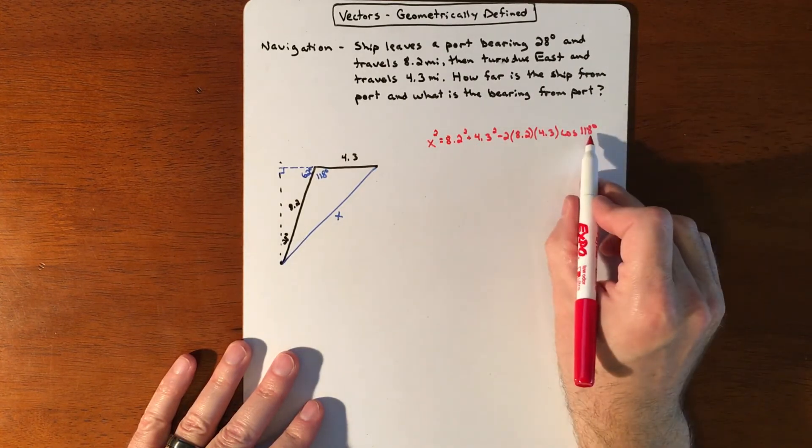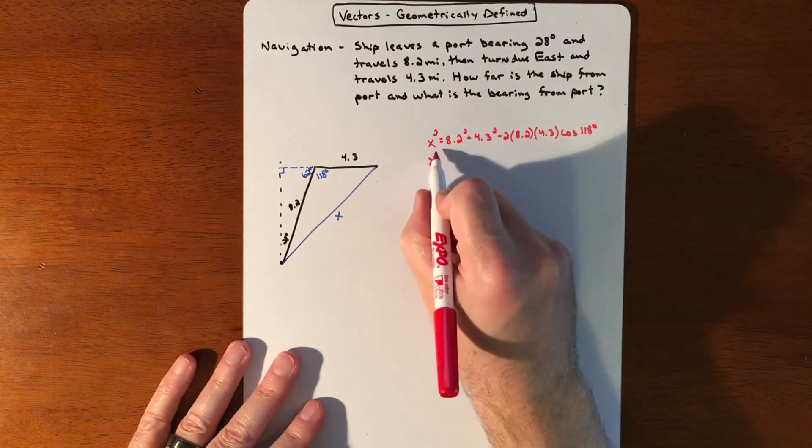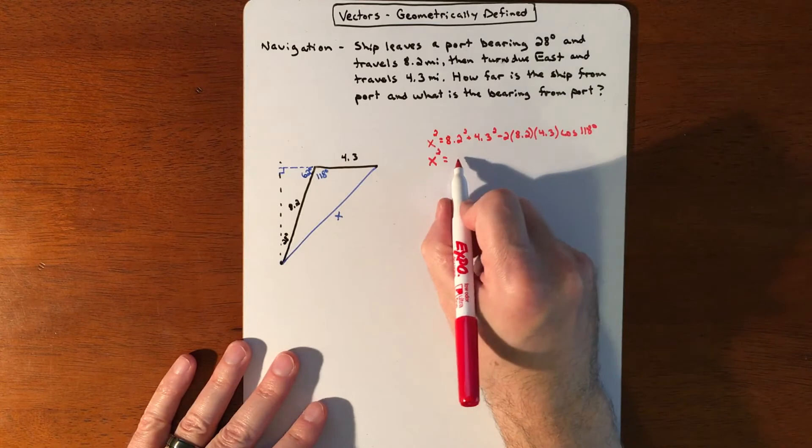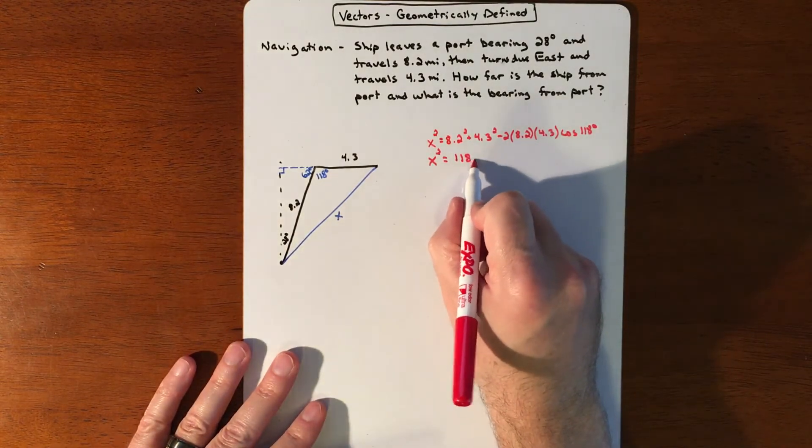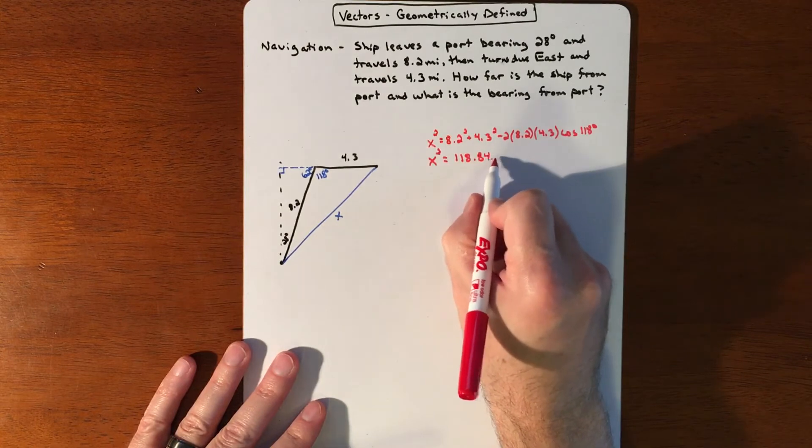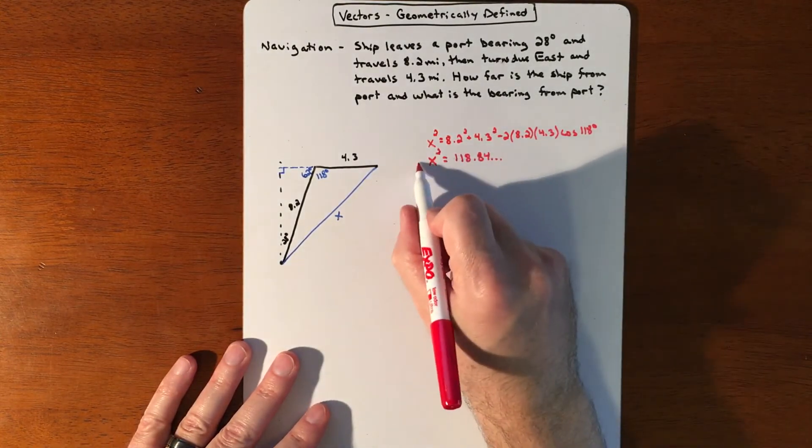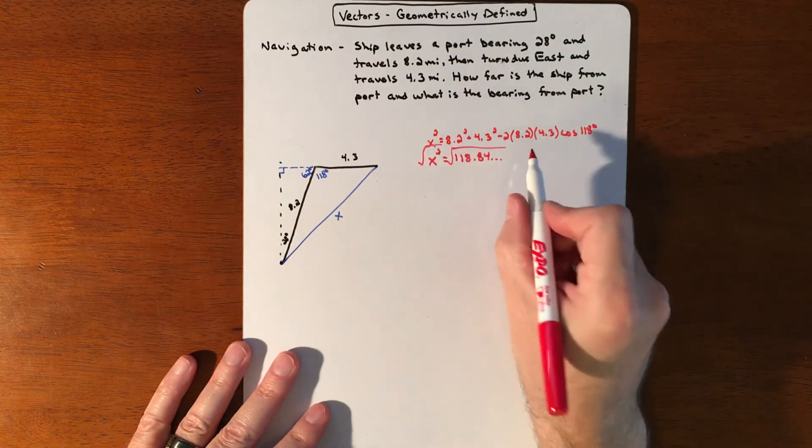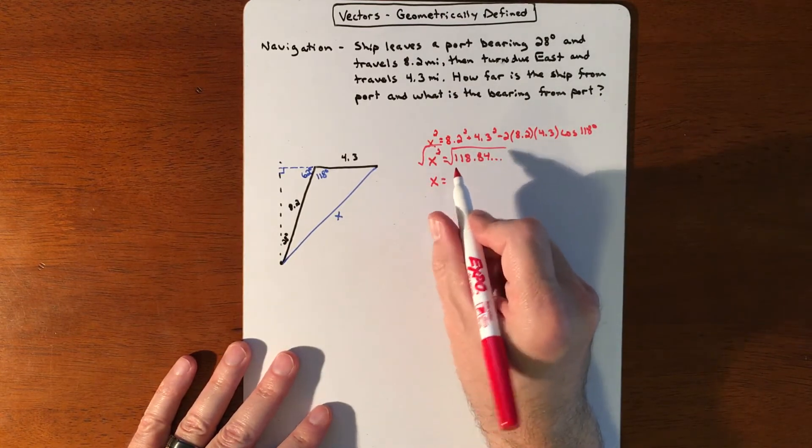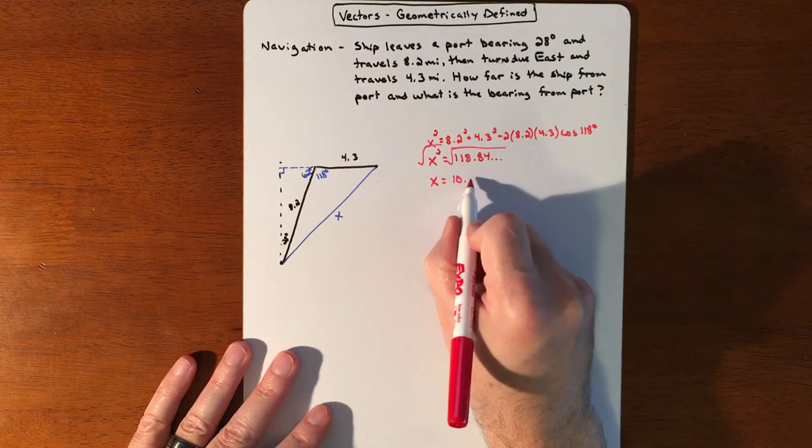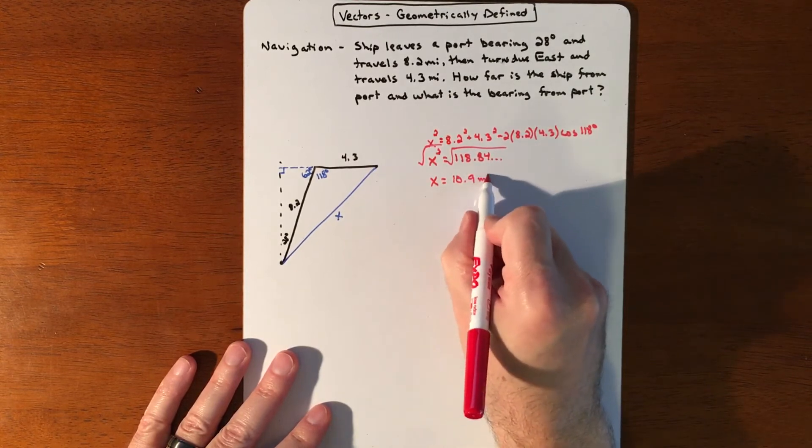So that all just gets thrown into the calculator. That's going to equal roughly 118.84 and a bunch of values after that. And then we'll square root that in its entirety. Let the calculator do all of that for you. And the length is about 10.9 miles.